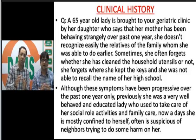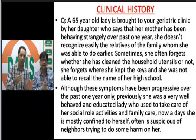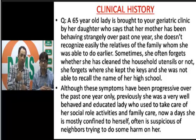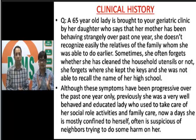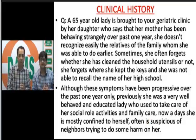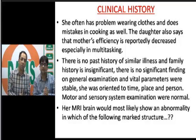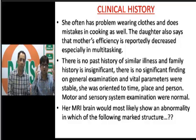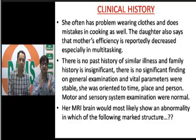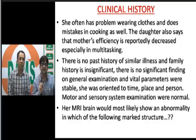To summarize: recent memory loss plus remote memory loss, agnosia, and behavioral disturbances. She has difficulty wearing clothes — dressing apraxia — and makes mistakes in cooking, affecting activities of daily living. These all require cognition and higher mental functions, pointing to pathology in the cortical system. Her efficiency is decreased especially in multitasking, which is executive function — planning, organizing, and sequencing.